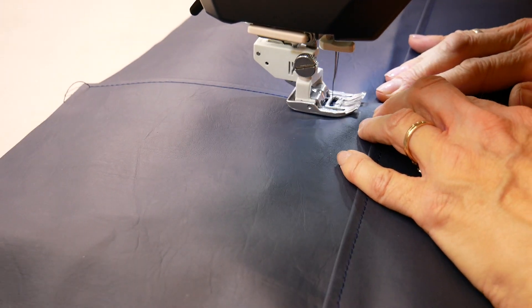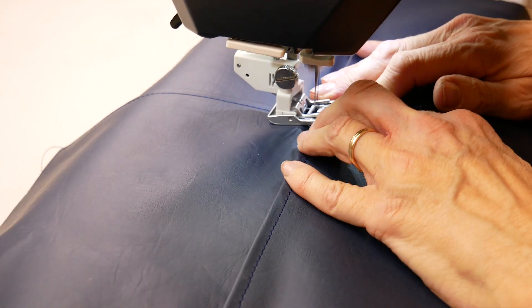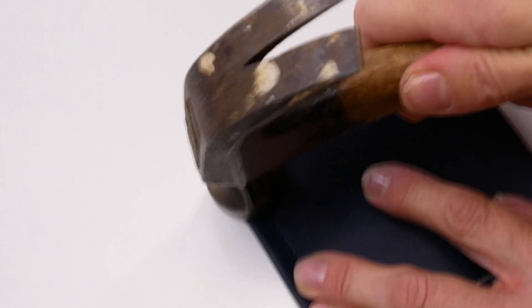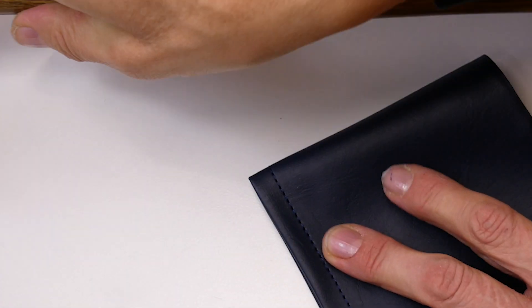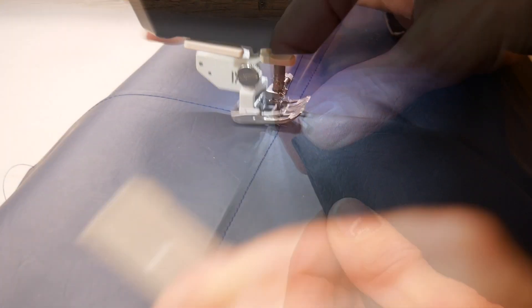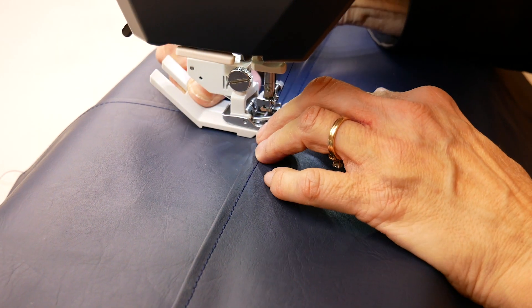Where the four corners meet, the material can be fairly bulky. Try hammering the fabric on the inside to flatten out the bulk before stitching, and using a hump jumper to get over the bulk.